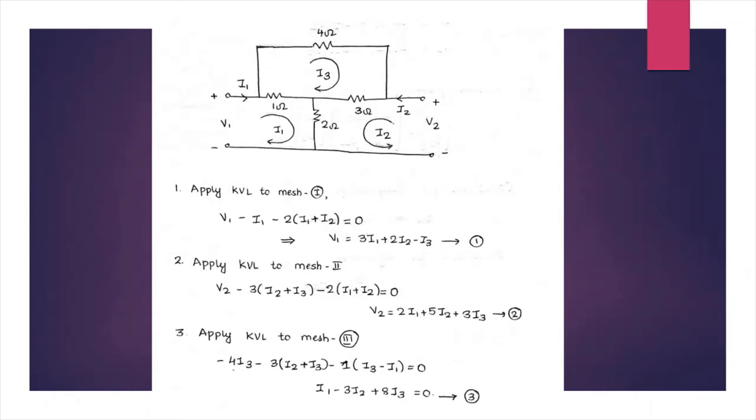So this circuit has got three meshes. Assign the mesh current such that all the currents are in the clockwise direction except for the output mesh. Since the current is incoming, assume that it is in counter-clockwise direction.